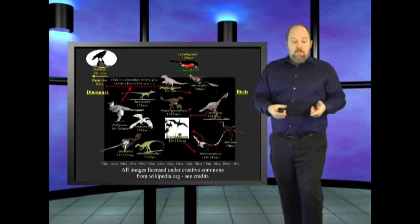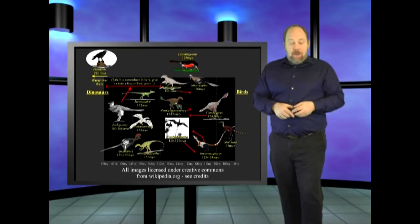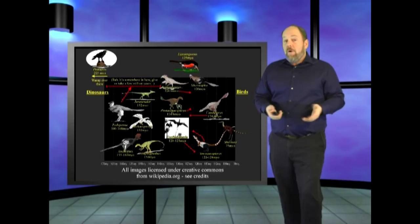They are called proto-feathers, or a half feather that hasn't quite evolved yet. Many evolutionists have argued, and I think correctly, that these are not feathers at all, but decayed collagen fibers. Others have questioned whether or not they are dinosaurs, instead of just flightless birds. But yet, let's take the claims at face value.